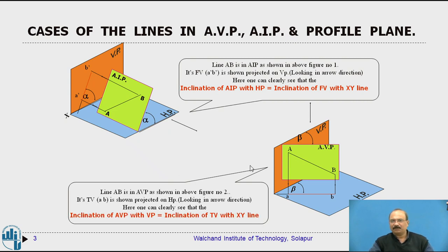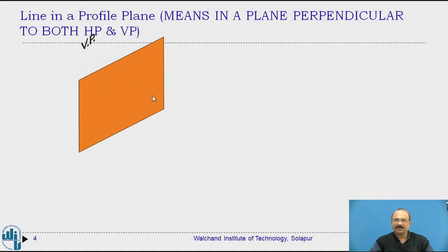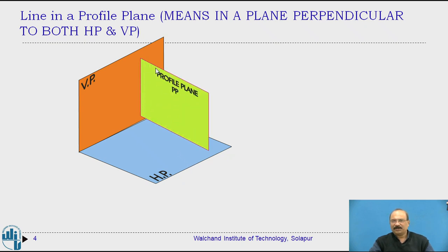So in continuation, we are going to tilt this particular plate perpendicular to the vertical plane as well as perpendicular to the horizontal plane — that is what we are going to be considering as a profile plane. The next topic is a line in a profile plane, meaning a plane perpendicular to both HP and VP. Just observe the same diagram: vertical plane, horizontal plane. We set up the profile plane here. Previously I considered planes making certain degrees of angle, either with the horizontal or vertical plane — called AIP and AVP. Now the important case is: the line is situated on the profile plane.